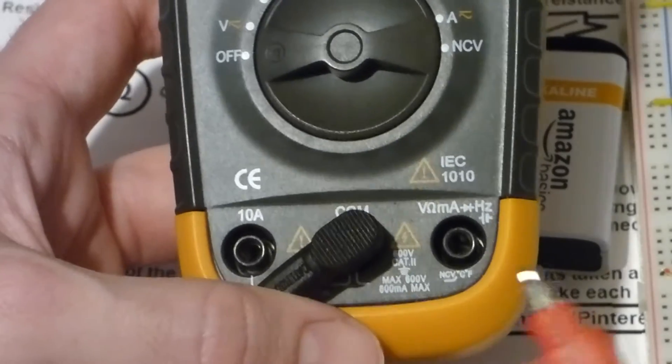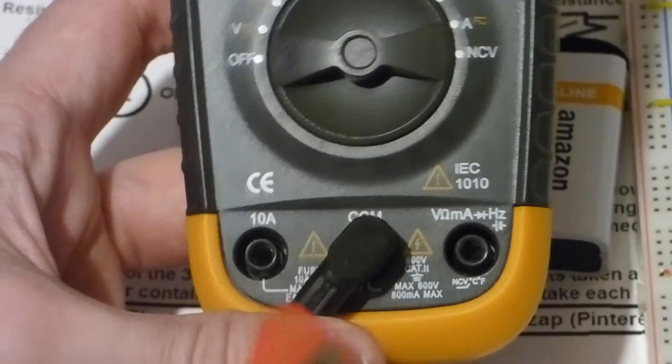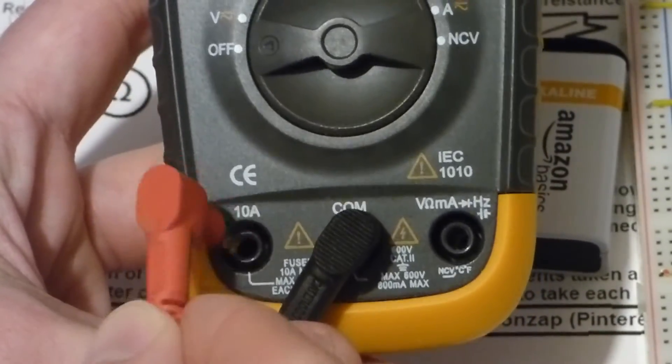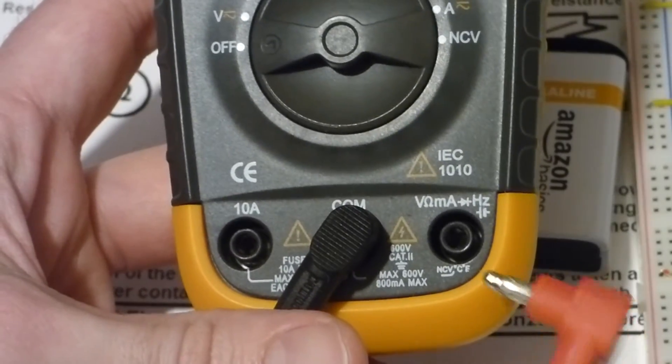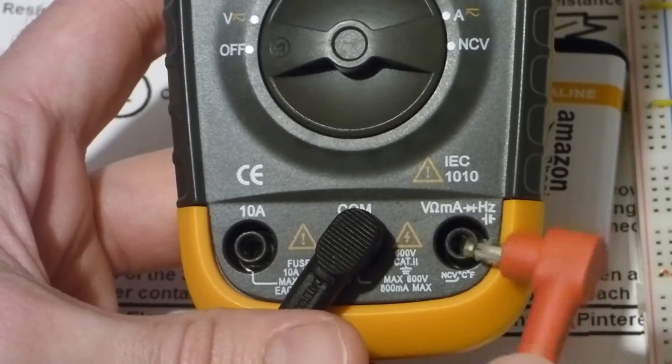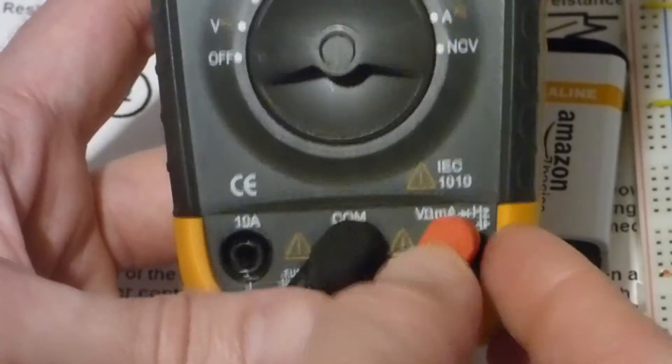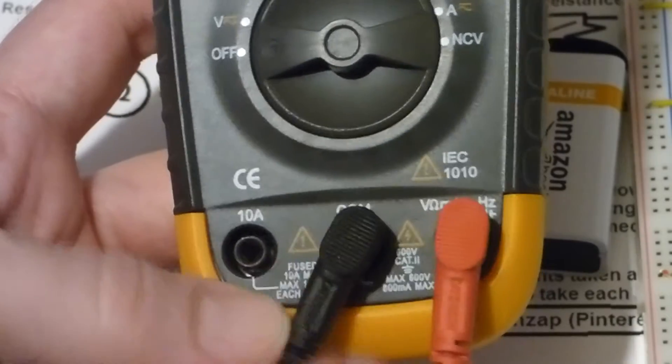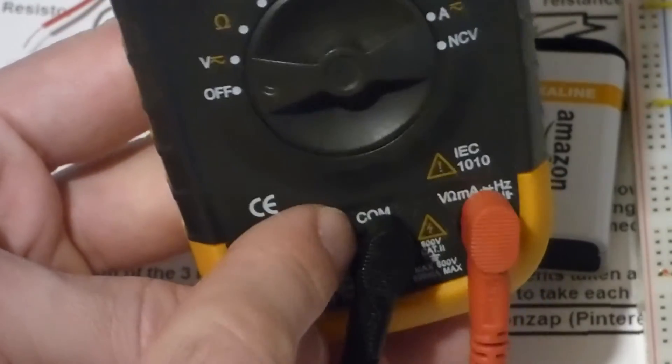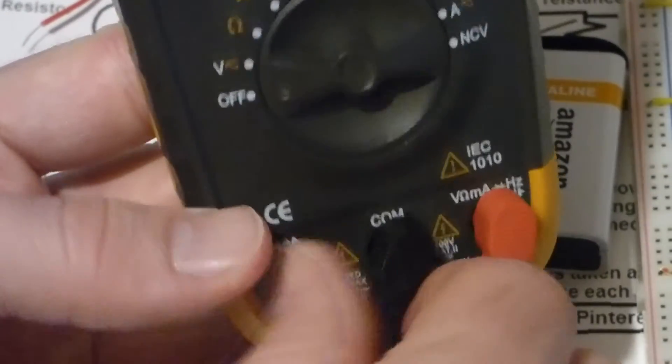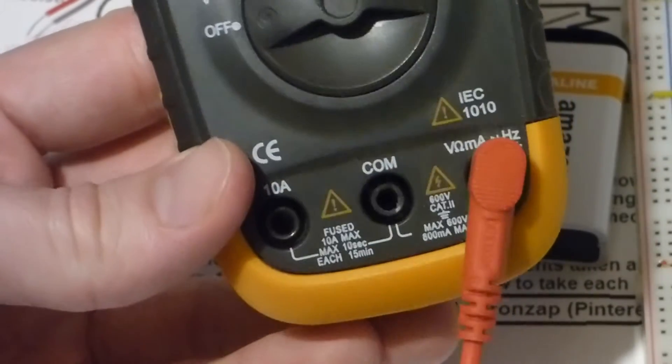Now the other end of the probes here, they plug into the meter and there's usually a high amperage side and then the other side that does all the other measurements. That's definitely the case with this meter, so I'm going to put the positive probe into there. Now the black probe is usually put into a slot called COM and that's generally where it stays.